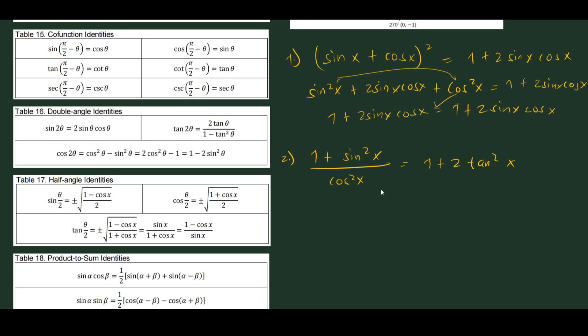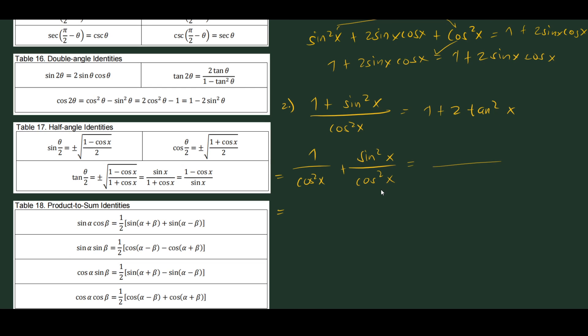Let's try by separating the two terms: 1/cos²x + sin²x/cos²x. We know that 1/cos²x is sec²x, and sin²x/cos²x is tan²x. Looking at the right-hand side, seeing tan²x gives you the idea to separate these terms, since tan²x is equivalent to sin²x/cos²x.